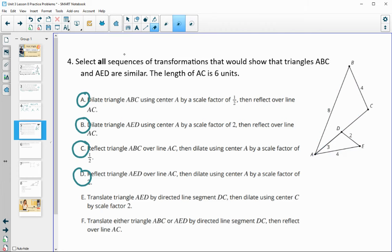Final one, or final two here, work with translations first. So this first one is saying if we do a translation by segment DC, and then we do a dilation by a scale factor of 2 around C, that that would land it back on itself, and that's not going to. We would still need a reflection. So E is wrong. And then F has us do a translation of ABC. And, well, it says either. So it says translate either ABC or AED by directed segment DC. And then reflect over line AC. So we can see that's not going to land on there either. So F would be false.